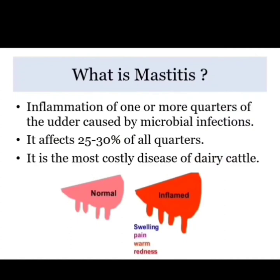What is Mastitis? Mastitis is the inflammation of one or more quarters of the udder caused by microbial infections. As we can see in the diagram below, the udder of a normal cow and the udder of a cow suffering from mastitis. Mastitis affects around 25-30% of all quarters, and it is the most costly disease of dairy cattle.